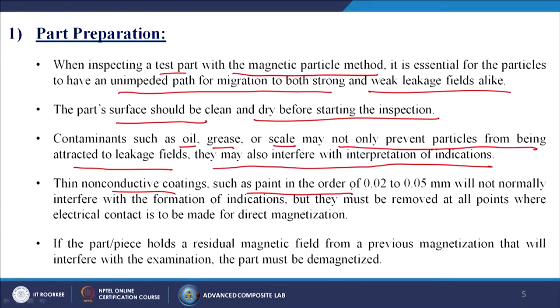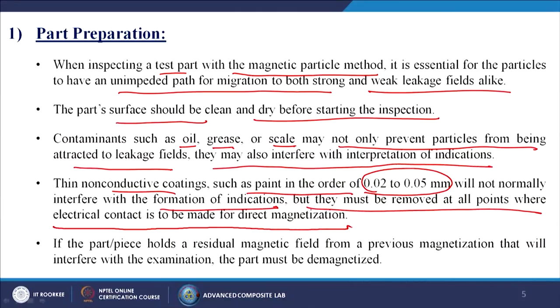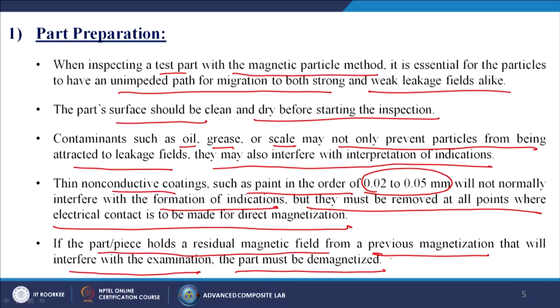Thin non-conductive coatings such as paint in the order of 0.02 to 0.5 millimeters will not normally interfere with the formation of indications. When we paint a part to restore or preserve its working life, if the thickness is below 0.02 to 0.05 mm there is no need to remove it; otherwise we must remove it. But paint must be removed at all points where electrical contact is to be made for direct magnetization, because paint acts as an insulator. If the part holds a residual magnetic field from a previous magnetization, it must be demagnetized.